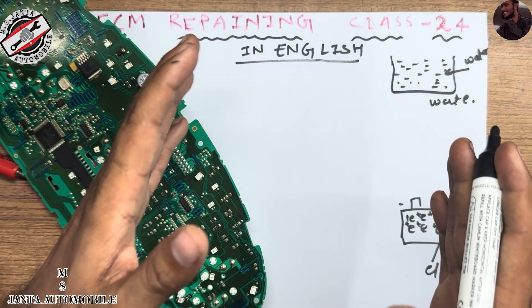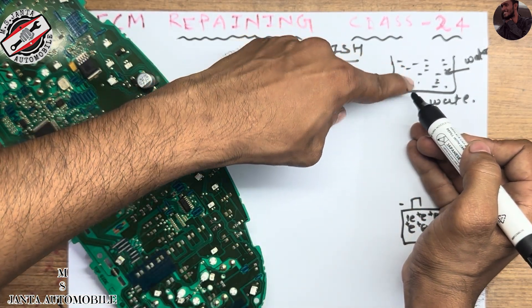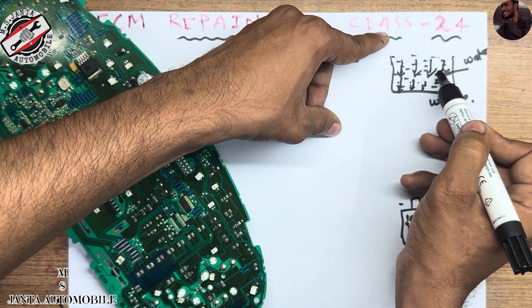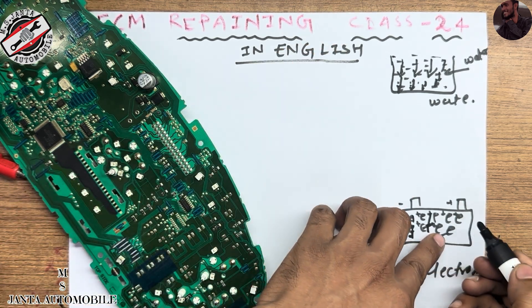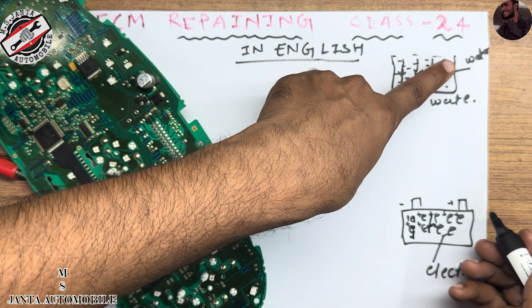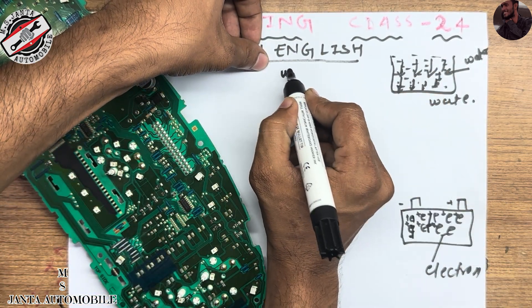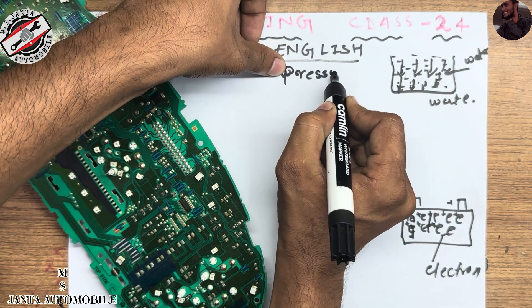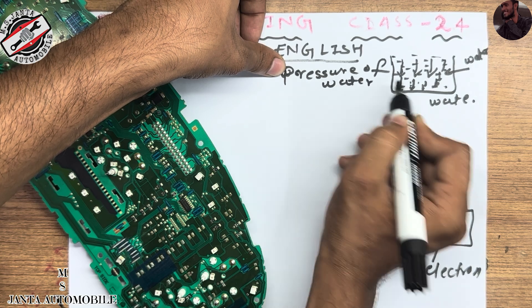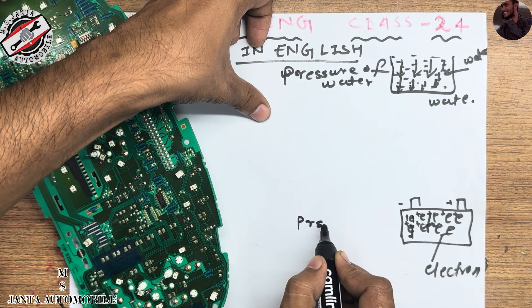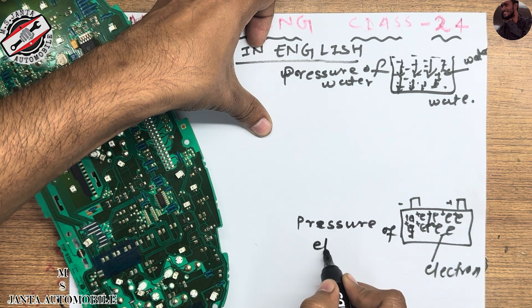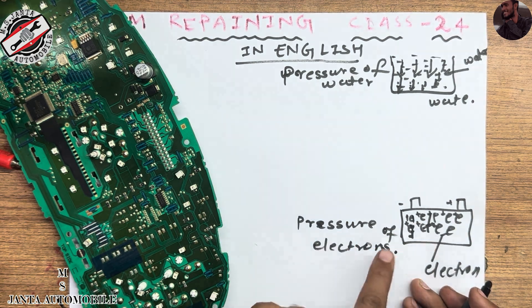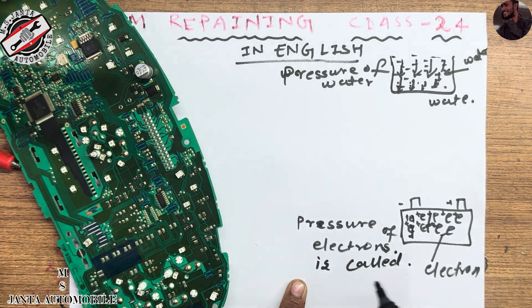When the water is stored in one place it creates pressure. You can see: the water is on the bottom and upper side — it gets pressurized. Similarly, in the battery there is a pressure of electrons. Pressure of water and pressure of electrons — the pressure of electrons is called voltage.